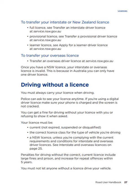Driving without a licence. You must always carry your licence when driving. Police can ask to see your licence anytime. If you're using a digital driver licence, make sure your phone is charged and the screen is not cracked. You can get a fine for driving without your licence or refusing to show it when asked. Your licence must be current — not expired, suspended or disqualified — the correct class for the type of vehicle you're driving, and a NSW licence unless you're complying with the requirements for interstate and overseas driver's licences. Penalties for driving without the correct current licence include large fines and prison, with increases for repeat offences within five years. You must not let anyone without a licence drive your vehicle.